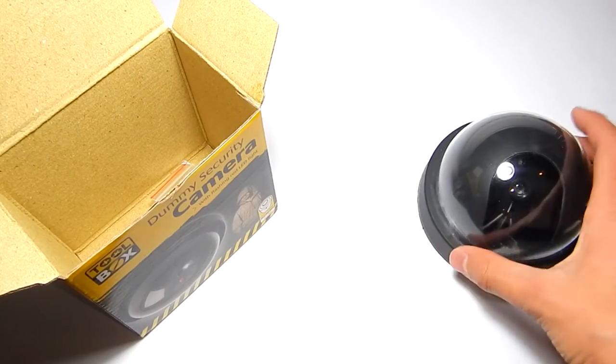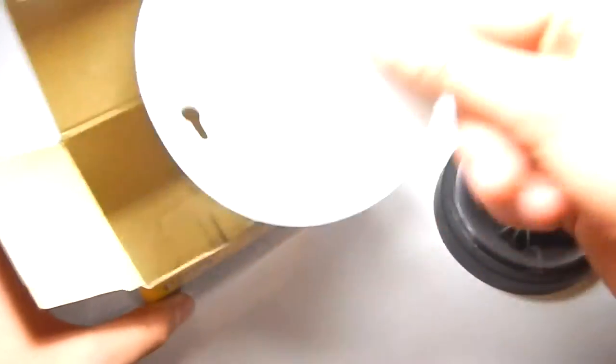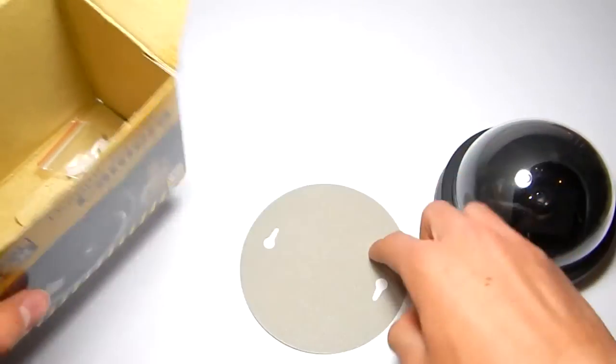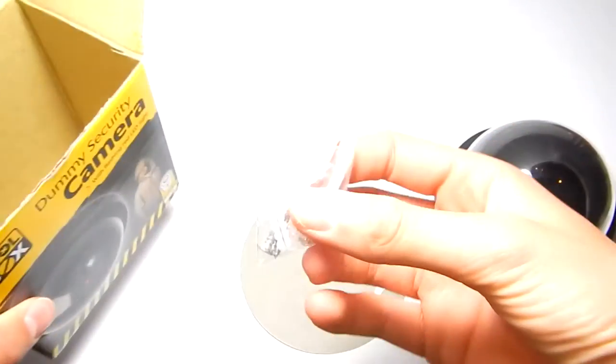So in the box we have the camera itself and we've also got this cutout which I'll come to in a second. And we've got some screws.